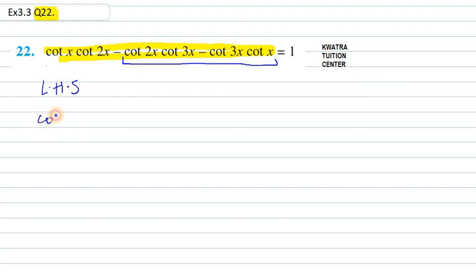What we can do is we can write the first term as it is and taking common cot 3x from the last two terms. Cot 3x will be common out from last two terms, so we are left with cot 2x plus cot x.